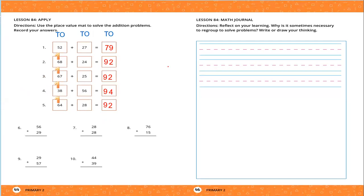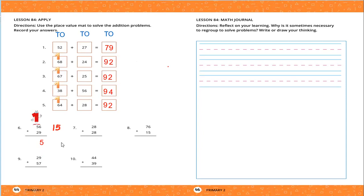Now let's move to addition problems written vertically — it's simple and easy. 56 plus 29: I will add first the ones digits. 6 plus 9 — big number 9 in my mind and 6 on my fingers. After 9: 10, 11, 12, 13, 14, 15. The result equals 15. I will write only 5 and carry up 1. 1 plus 5 equals 6, then 6 plus 2 — 6 in my mind and 2 on my fingers. After 6: 7, 8. So I will write 8.